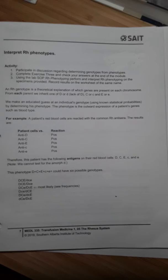We're going to work today on interpreting RH phenotypes, and we're going to work through the exercise that is on page seven and eight of the RH module. At the top of page seven it says interpret RH phenotypes, and there's information there about determining genotypes.